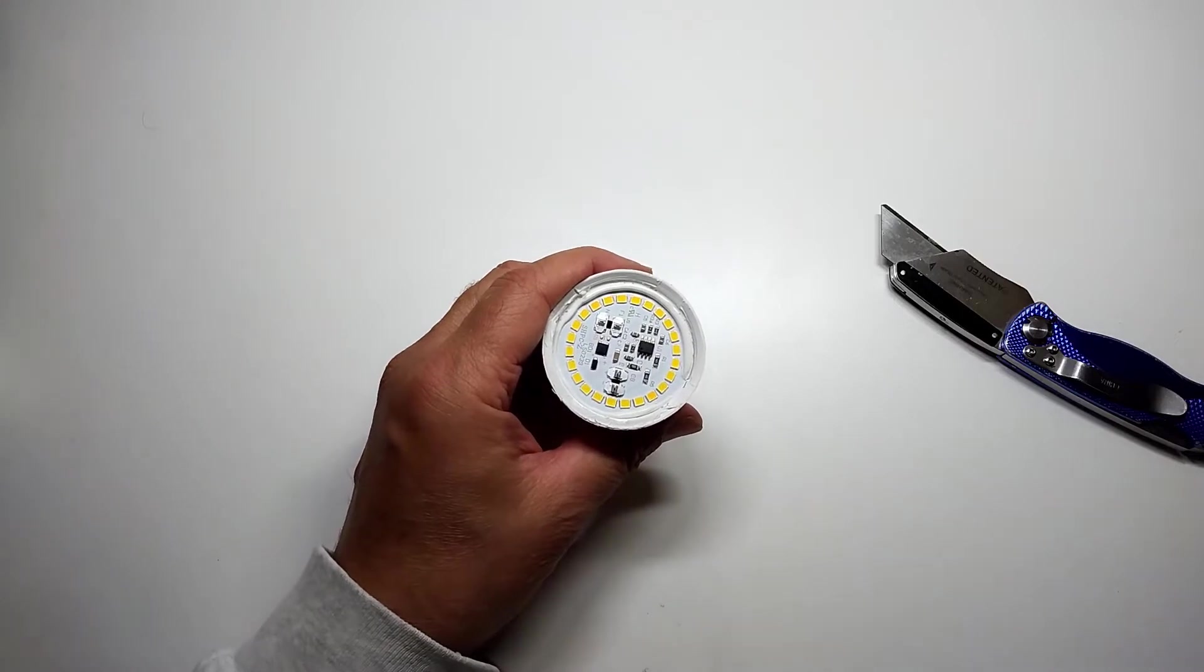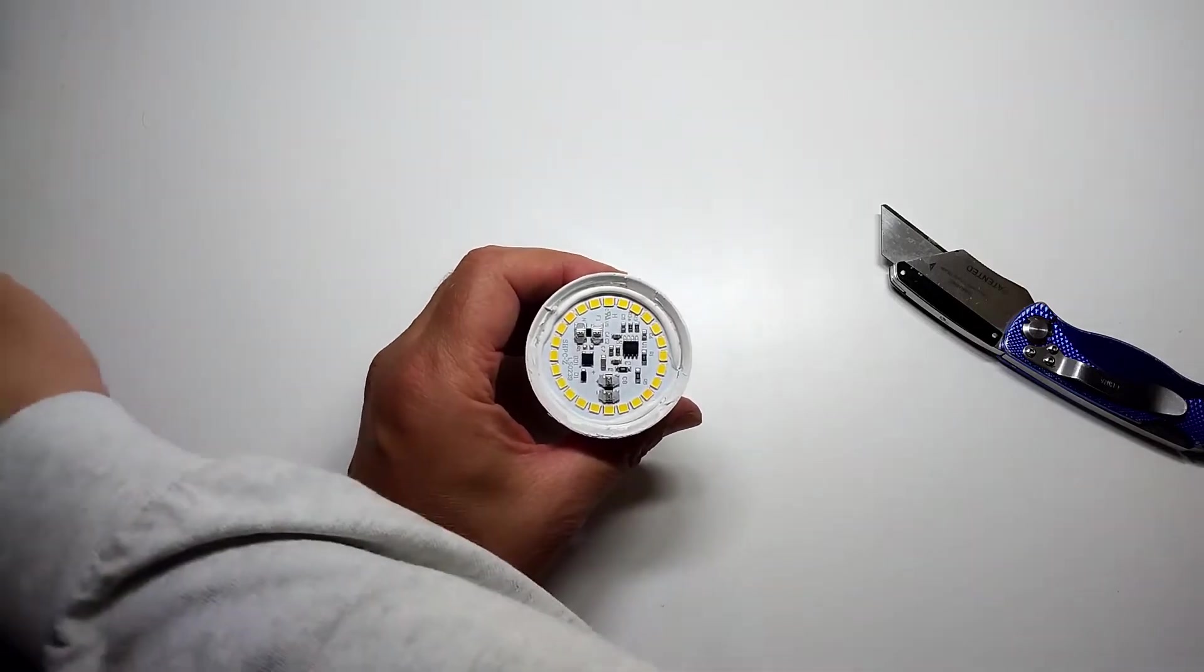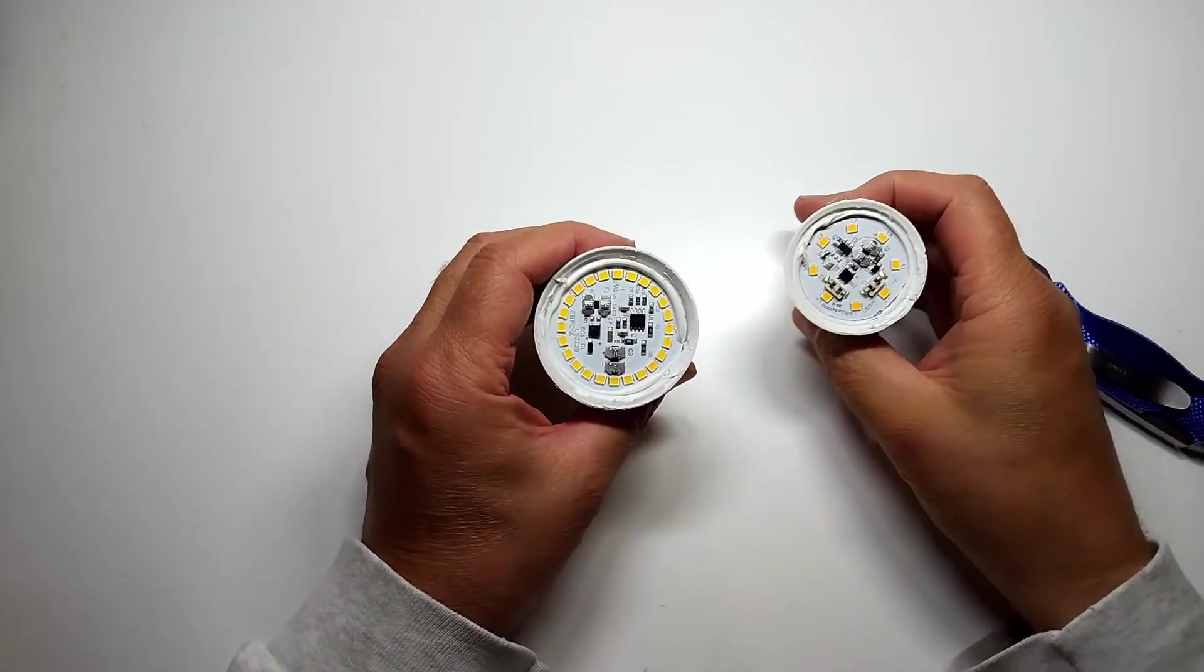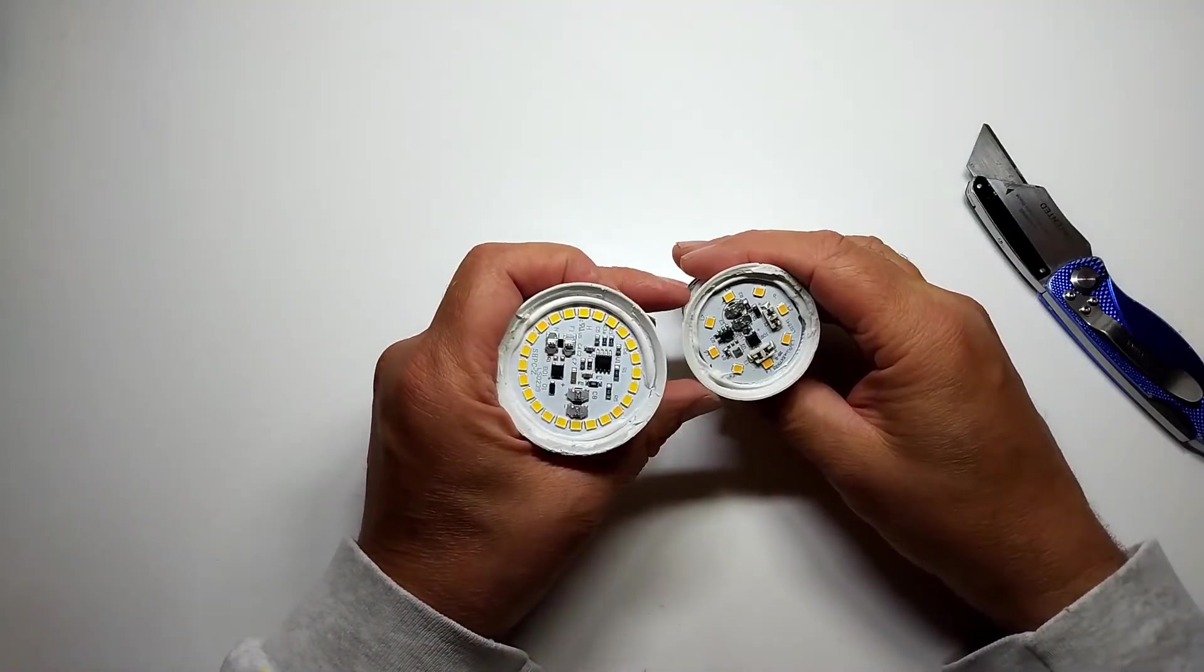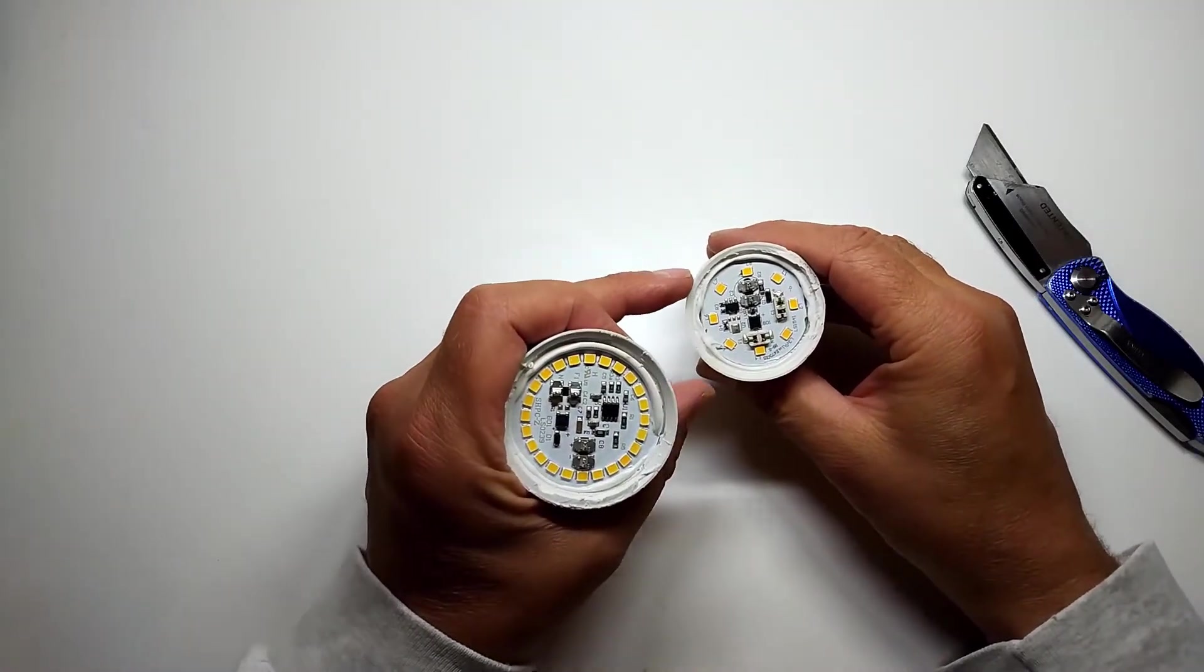The two circuits are very similar. The 12-watt bulb has 24 LEDs and the six and a half watt has eight.